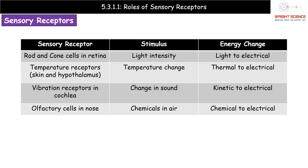The second example is temperature receptors. We monitor both internal and external temperatures. External temperature receptors are located in your skin, and internal ones are in the hypothalamus within your brain. The stimulus for these is temperature changes, and the energy change involved is from thermal energy to electrical energy.